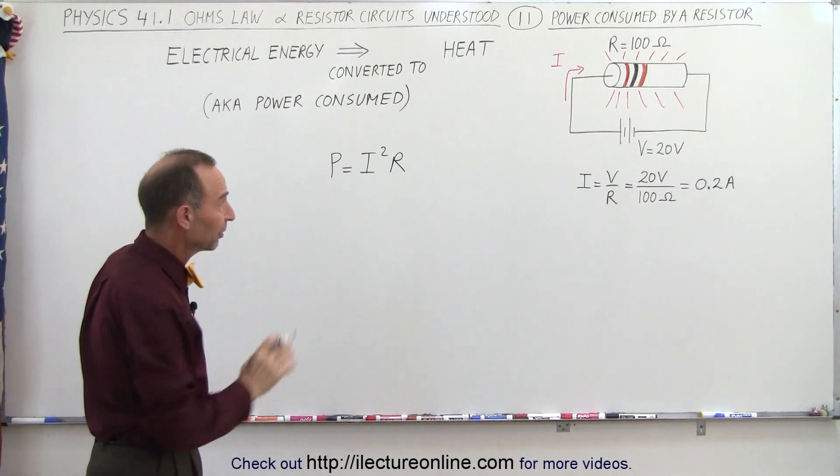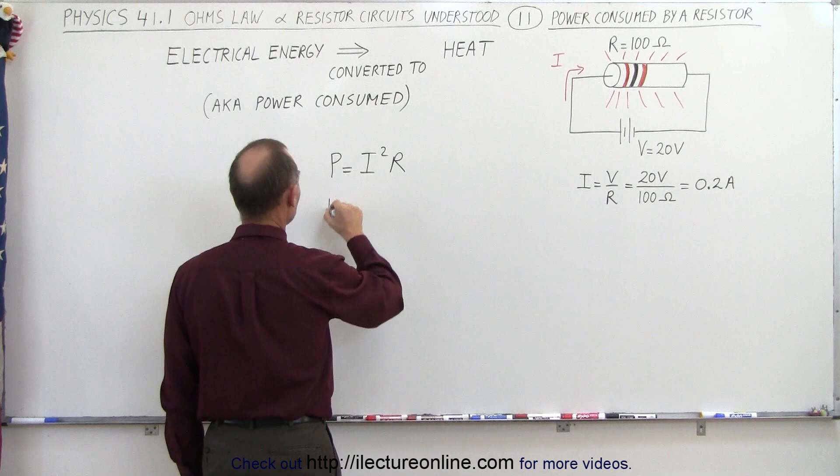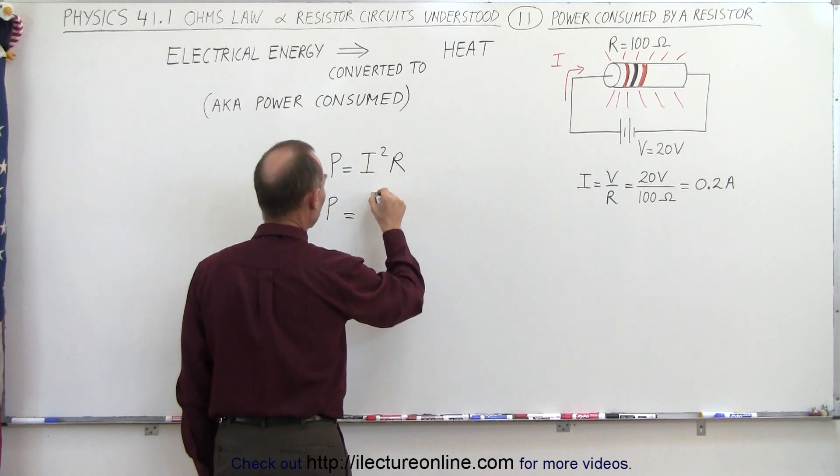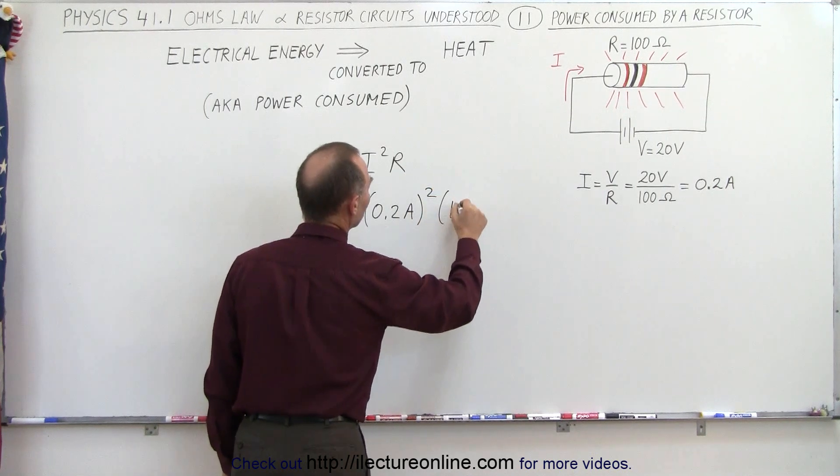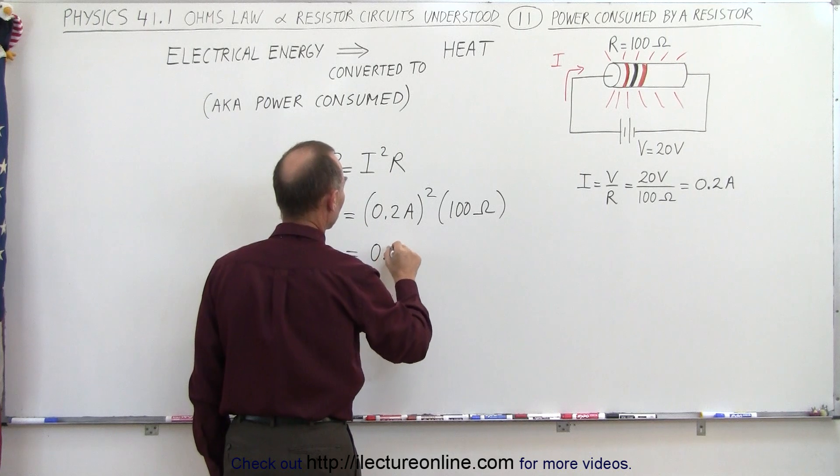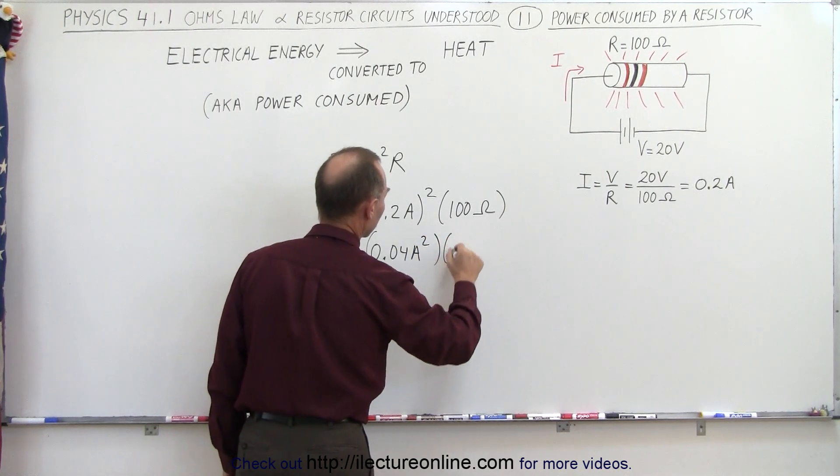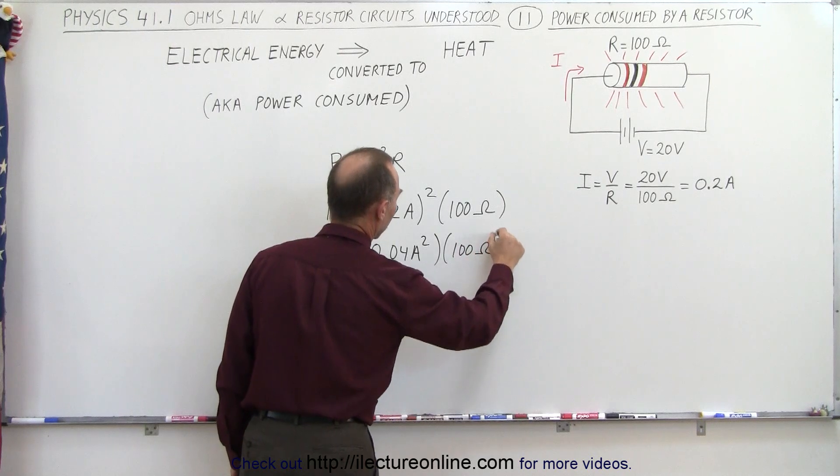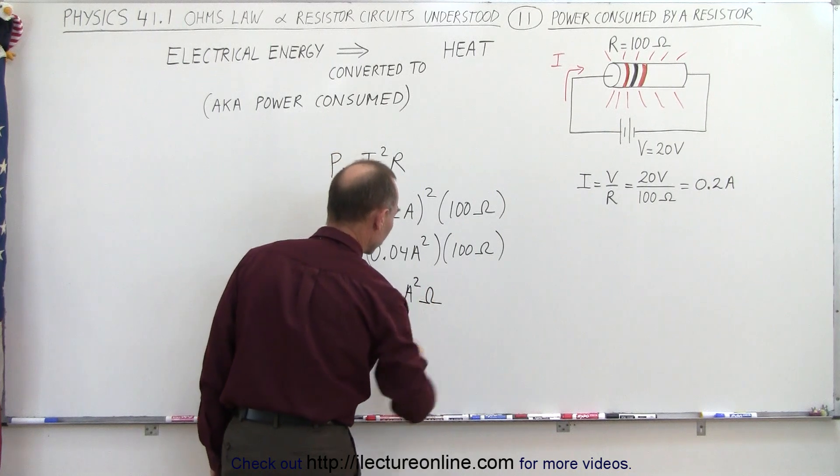Now let's go ahead and try that for this particular example. So in this case, we calculated the current to be 0.2 Amps, so that would be 0.2 Amps quantity squared times 100 Ohms. So that would be equal to 0.04 Amps squared times 100 Ohms. And so this becomes equal to 4 Amps squared times Ohms.